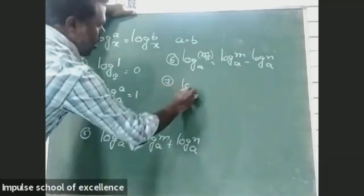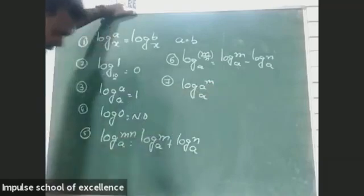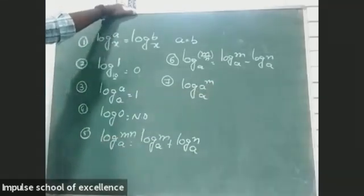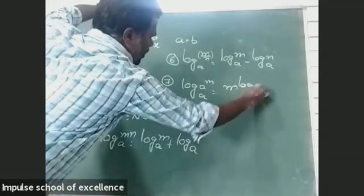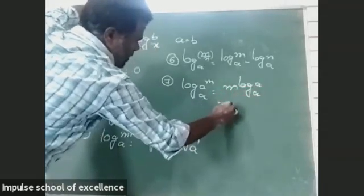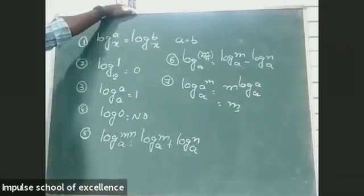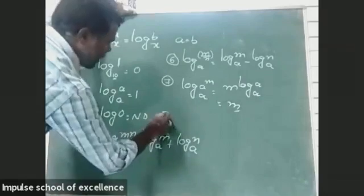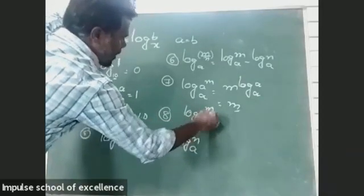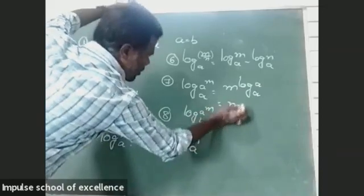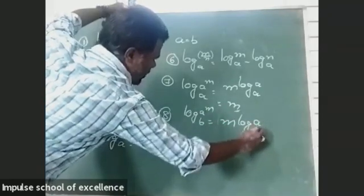One more property: log A power M base A is equals to log A base A, that is equals to M. And log A power M base B is equals to M times log A base B.